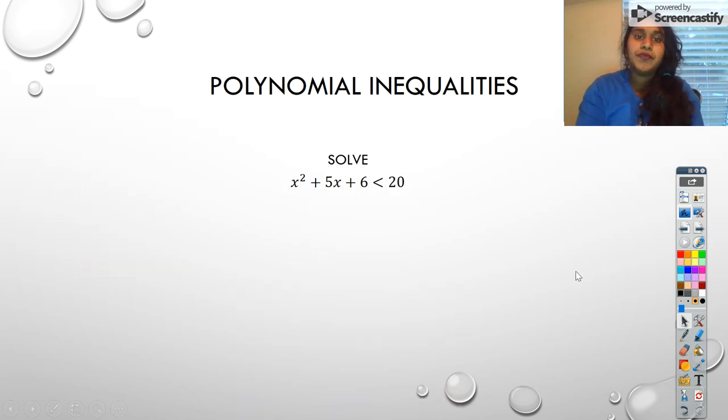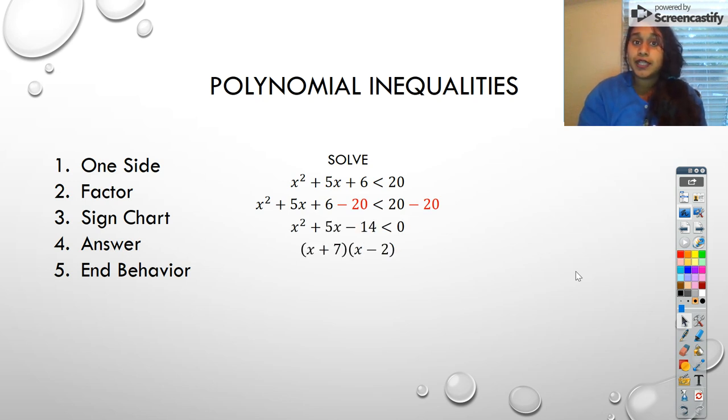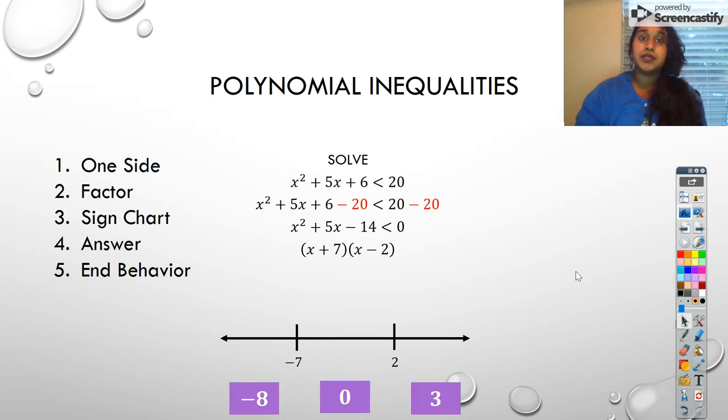I've got one more example for you. So again, bring everything to one side. Factor it out. Use a sign chart and get your answer. I brought everything to one side. Now I factored it out. I put a sign chart down. And again, my numbers aren't going to be seven and negative two. They're actually going to be negative seven and positive two. I test those values. I pick negative eight, zero, and three. When I plug those back in to my factored form, I get a negative and a negative. My middle interval gives me a positive and a negative. And my last interval gives me a positive and a positive. And if I multiply that back out, then I know that that's actually going to be a positive, a negative, and a positive.